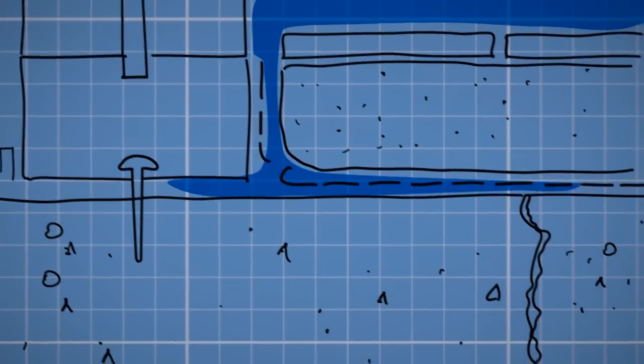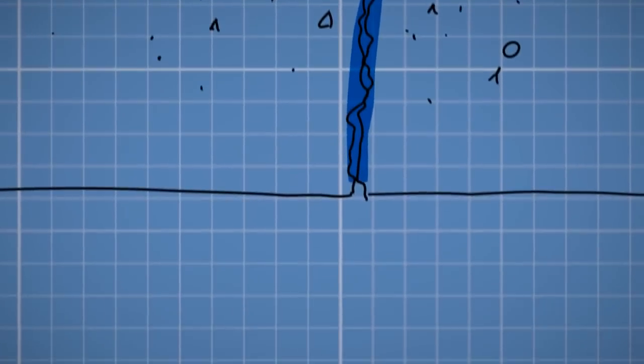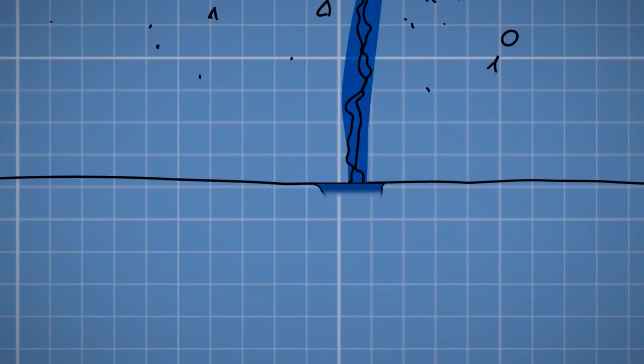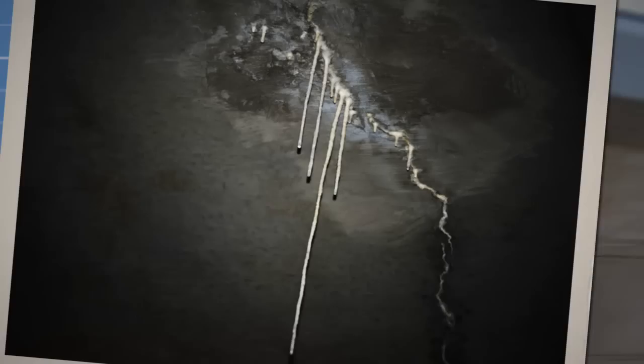Then the stored water has time to seep through the concrete, dissolving calcium and other minerals as it runs down the cracks. On exposure to the air, the mineral solution dries, leaving behind stalactites, just like in caves.